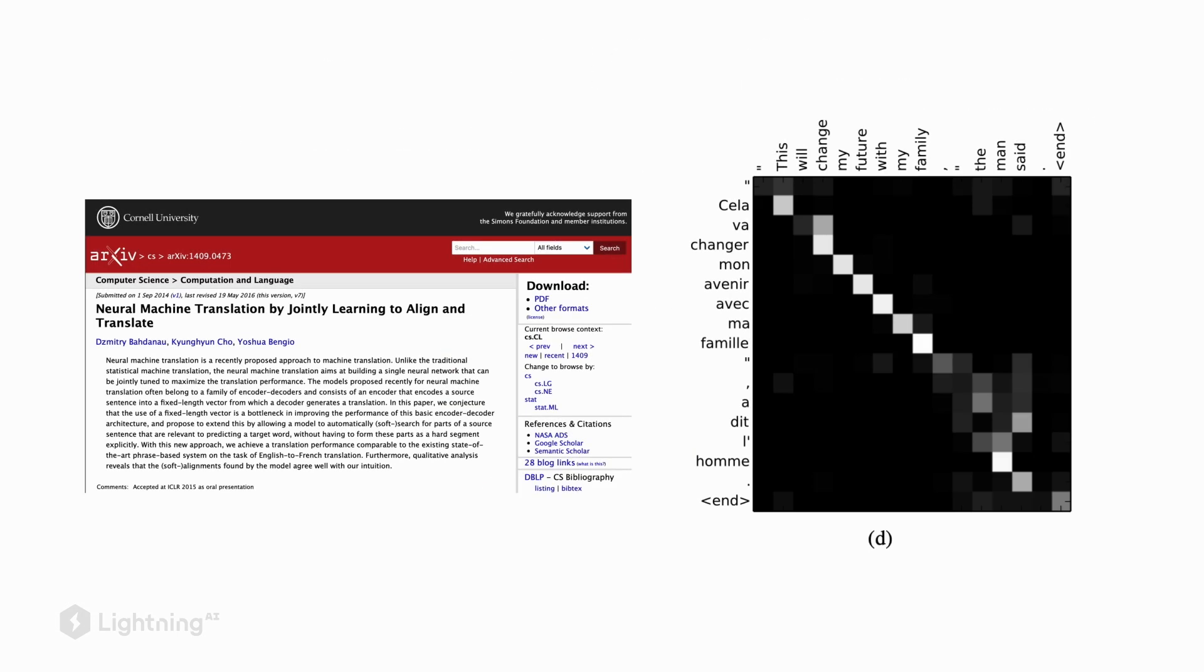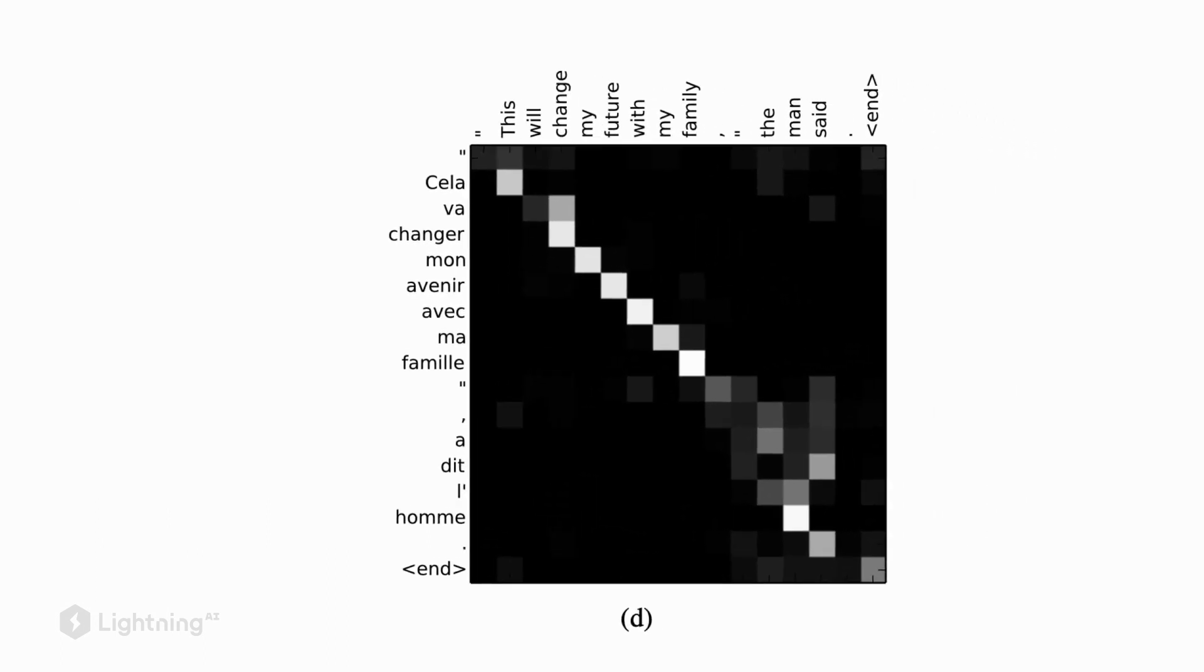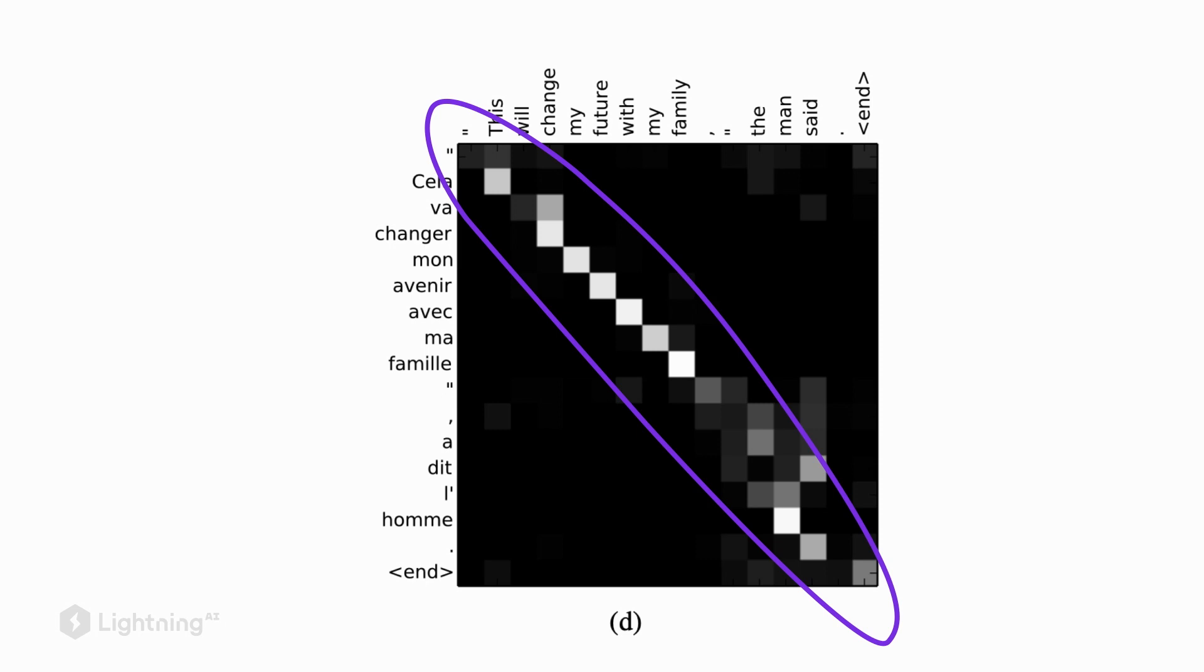Here we see a visualization of the attention score matrix from the paper, where they had a French-English translation task. We can see in the diagonal the attention scores are very strong for the one-to-one word correspondence - this would be a sentence that can be translated almost word by word. However, we can see there are a few exceptions where the attention scores are high outside the diagonal.